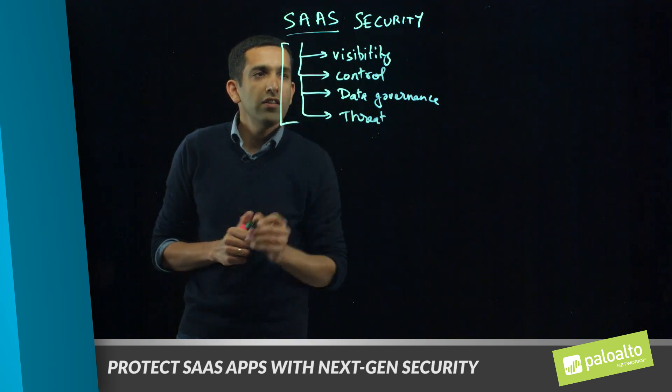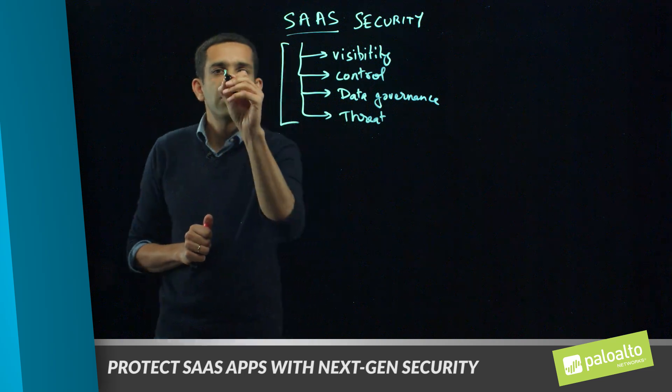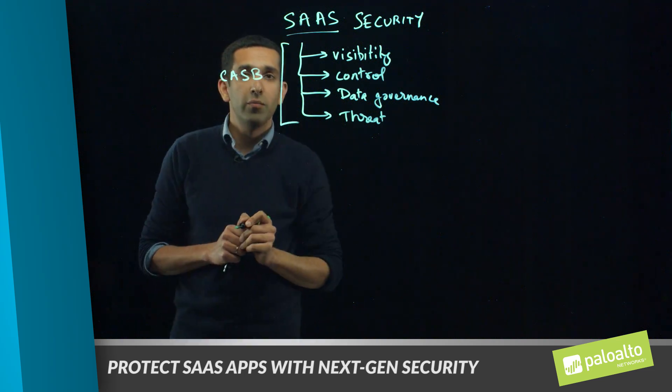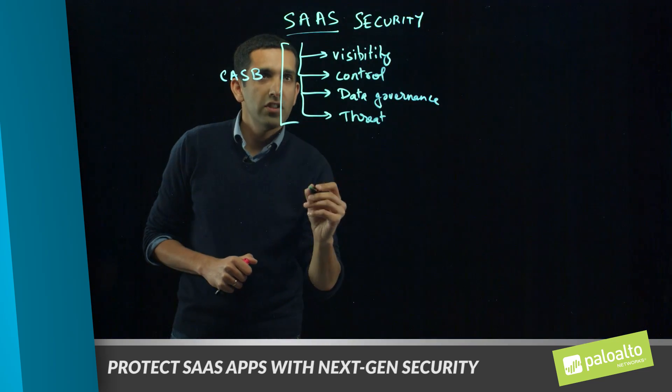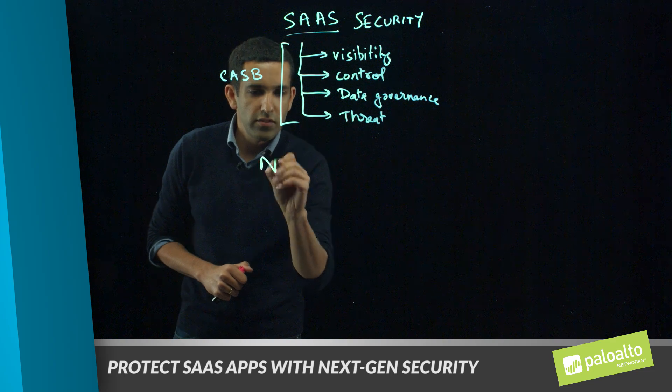All these four different components are actually termed as CASB, or Cloud Access Security Broker, and this is a very common term being used by analysts today. Now let's look at the components that are part of the SaaS security solution.